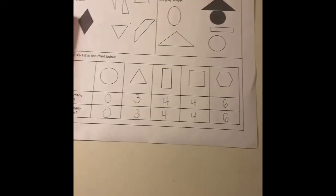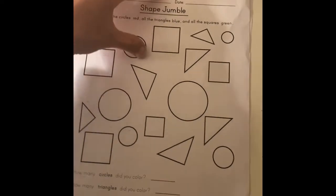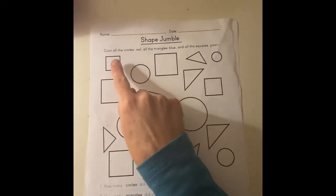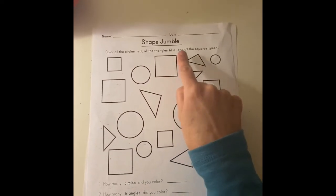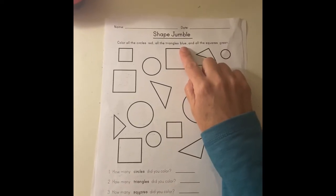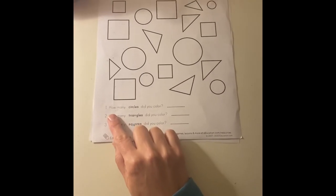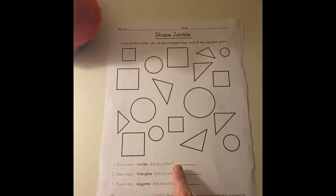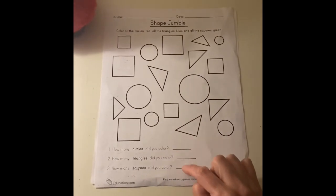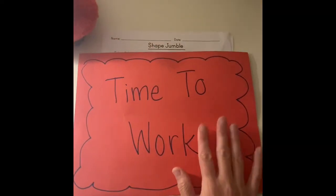Next, I'm going to pull out this paper — the Shape Jumble. If you already did this, that's okay, you can skip it. I just didn't see this in any of the lessons, so I thought we might as well do it now. At the top it says: color all the circles red, all the triangles blue, and all the squares green. So circles are red, triangles are blue, squares are green — just color them in based on the directions. Then down here you have three questions: how many circles did you color, how many triangles, how many squares? Count and write how many you have of each shape. If you'd like to do that, pause the video and get to work.